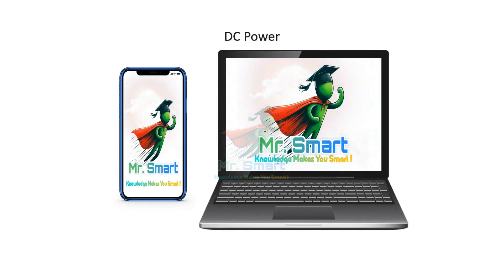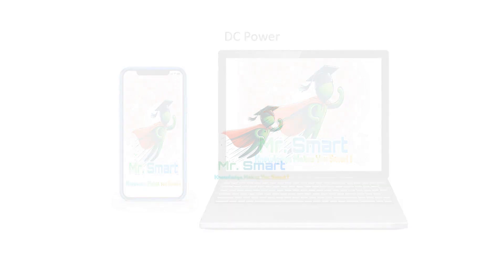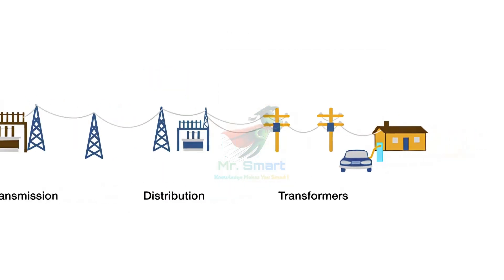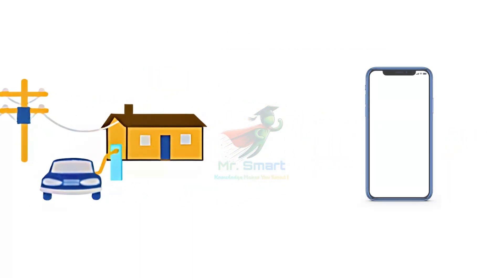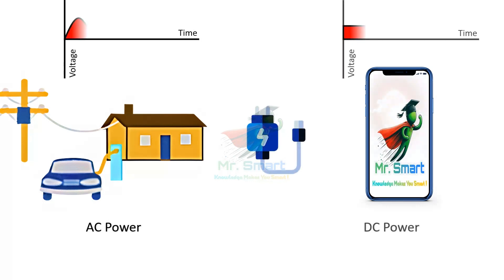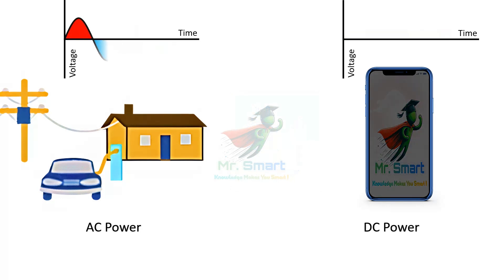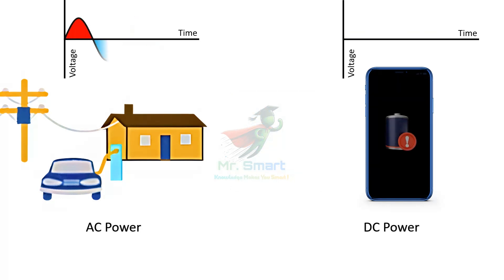Most electronic devices, like your phone or laptop, operate on DC power. Since the electricity from the grid is AC, we need a device or circuit to convert it into usable DC power. Without this, these devices wouldn't function properly.